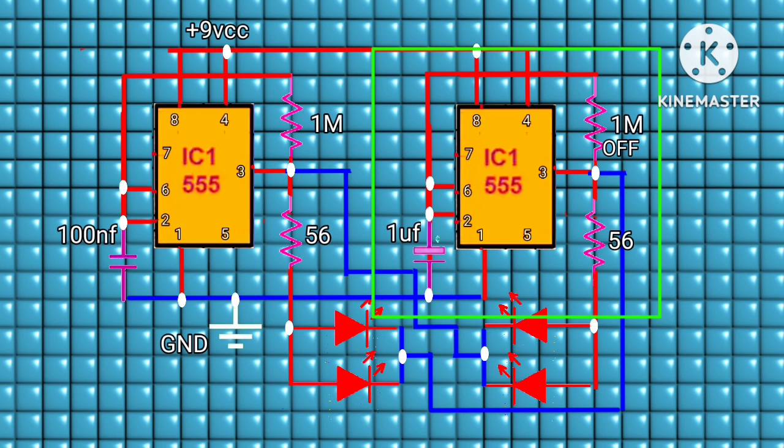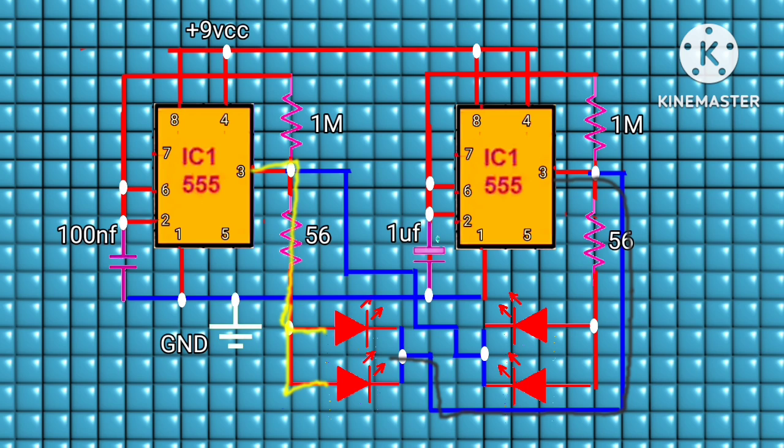That means it takes more time to switch from on state to off state. The first group of LEDs turns on when there's a positive voltage at the anode and a negative voltage at the cathode. And this happens when the first 555 timer IC is on and the second is off at the same time.